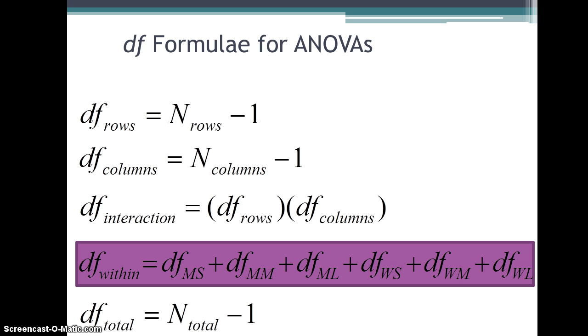And next, we look at degrees of freedom within. And essentially, what we're saying is for each individual cell, each individual group of people, we are going to have a degrees of freedom. And then we add them all together. And so for each cell of our research design, it will be the number of participants in that particular cell, and subtract out one. And then we add all of the different cells' degrees of freedom together, and we get degrees of freedom within. So men soft, men medium, men loud, women soft, women medium, women loud.